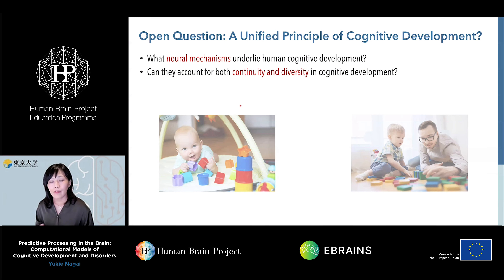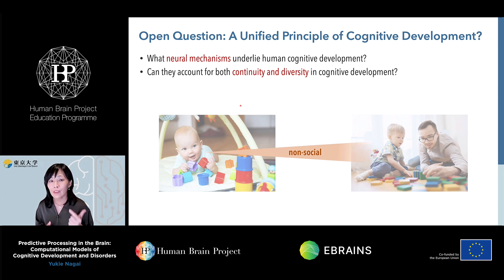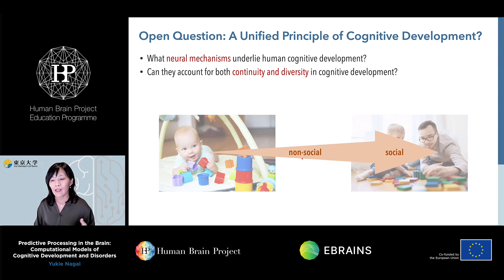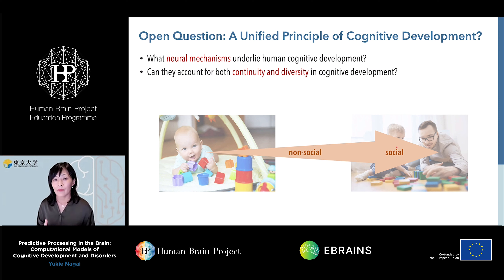We are looking at a unified principle for cognitive development. I think there are two important aspects that must be accounted for. The first is the continuity in cognitive abilities. We know that human babies first acquire non-social, more self-oriented behaviors, and then based on this, they also learn to acquire social capabilities — how to communicate with others. We don't yet know how this continuous development can happen in the human brain.